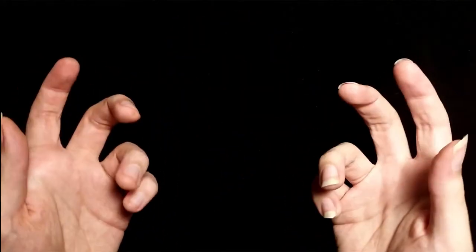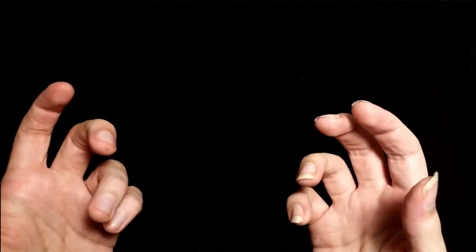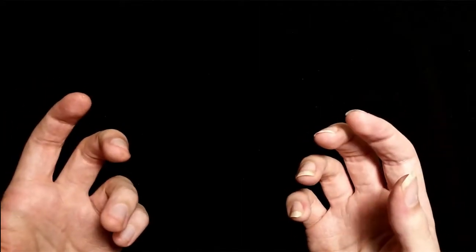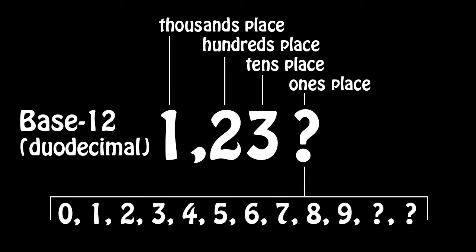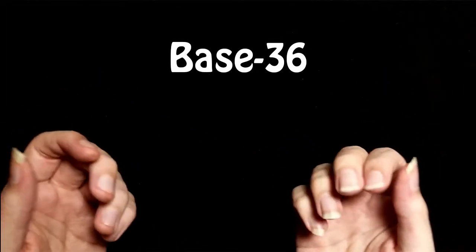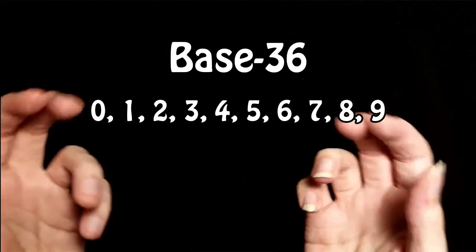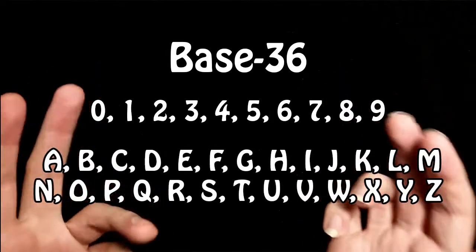And of course bases can go above 10 as well, but in such a situation you run into a little bit of a problem, because you run out of Arabic numerals and fingers to count on. So in these cases we turn to the Latin alphabet. Because of this, the largest base system that can be easily expressed and understood by humans would be base 36, utilizing the 9 Arabic numerals and the 26 letters of the modern Latin alphabet.